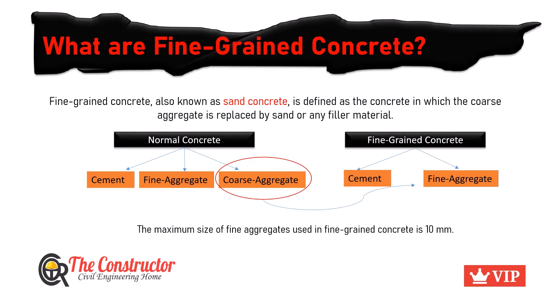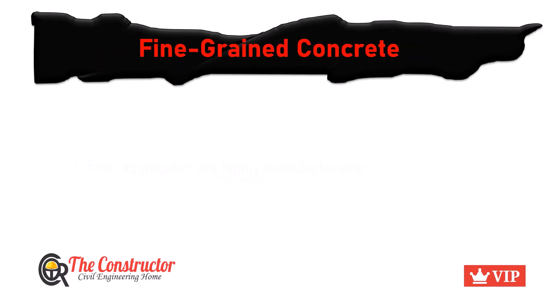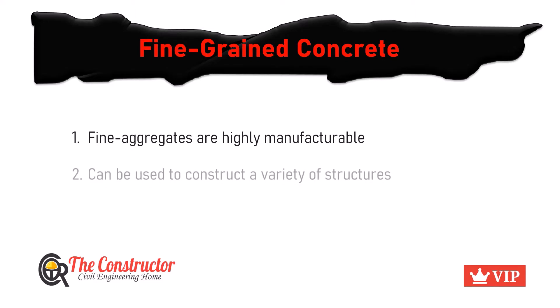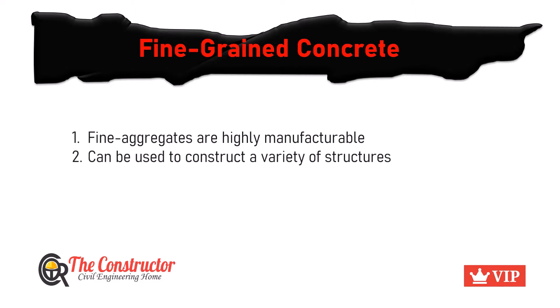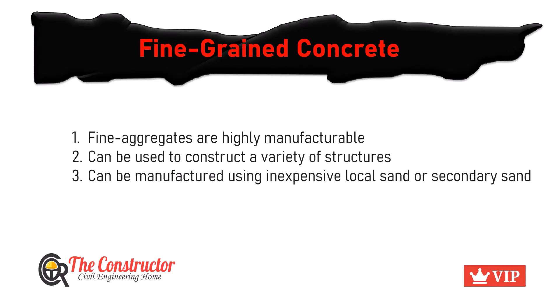Fine grain concrete is gaining popularity in modern construction, as they are highly manufacturable and can be used to construct a variety of structures. They can even be manufactured using inexpensive local sand or secondary sand.